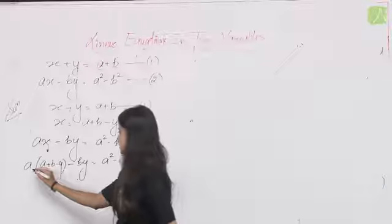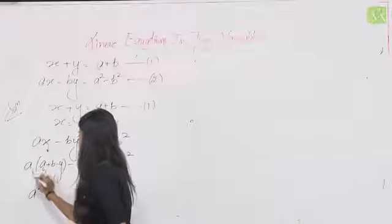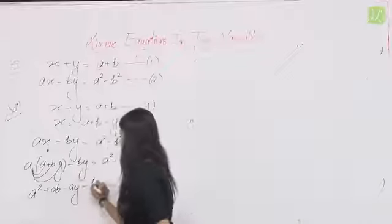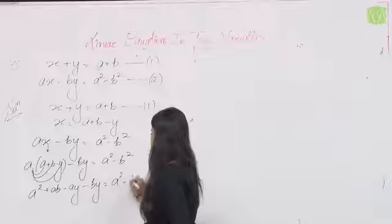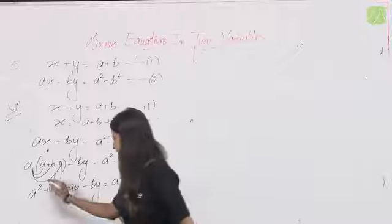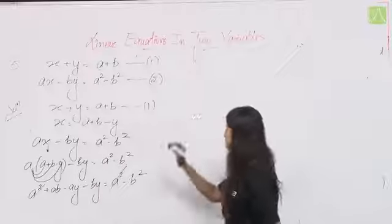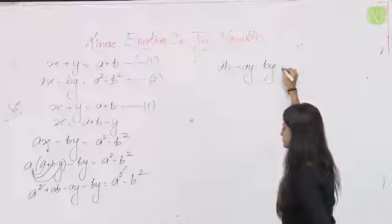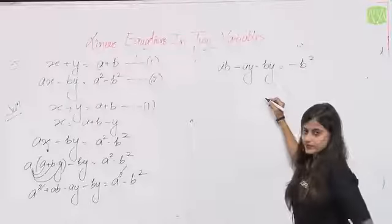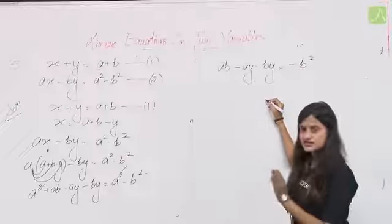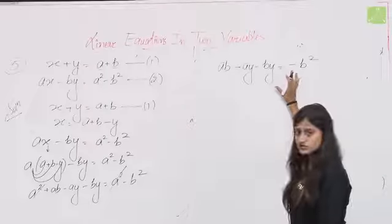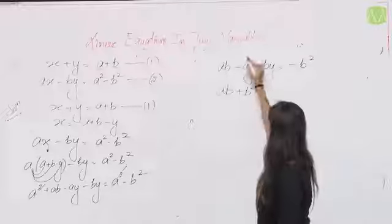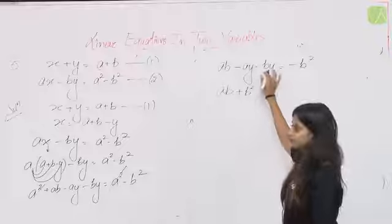Brackets open करते हैं: a² + ab − ay − by = a² − b²। a² से a² cancel हो जाता है। Remaining: ab − ay − by = −b²। b square को यहाँ भेज देते हैं: ab + b² = ay + by।